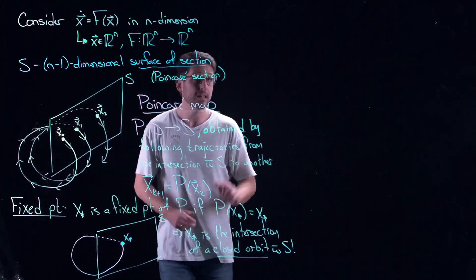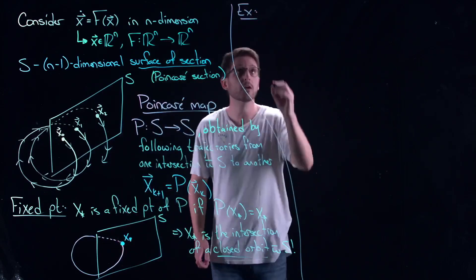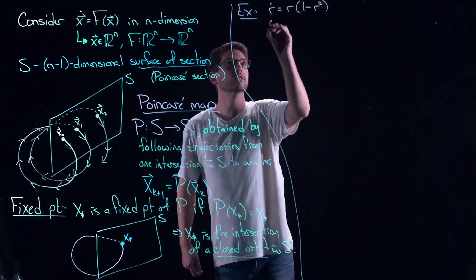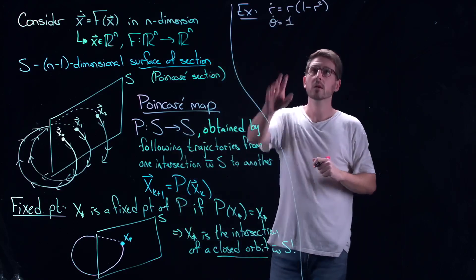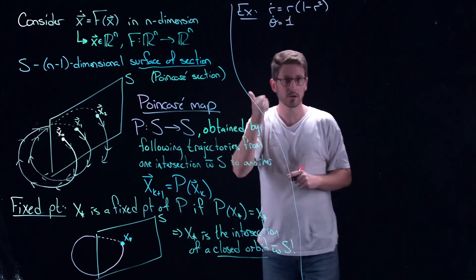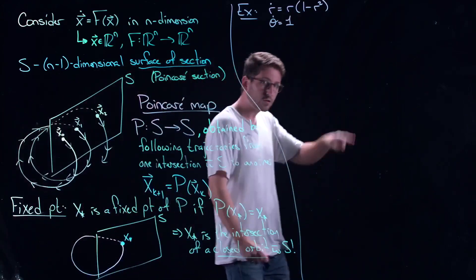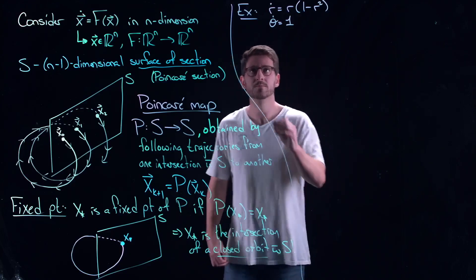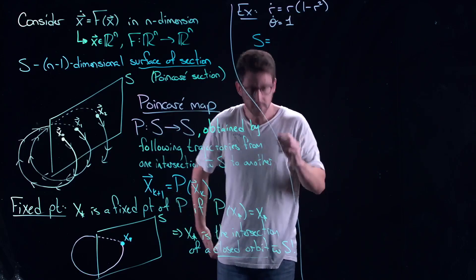Let's actually do some examples. Let's start with really one of the first examples we ever saw with closed orbits, and let's go into polar coordinates. Polar coordinates is very advantageous for understanding closed orbits. So we have a uniform oscillator in the phase variable and the radial variable here — it has two fixed points, R = 0 and R = 1.